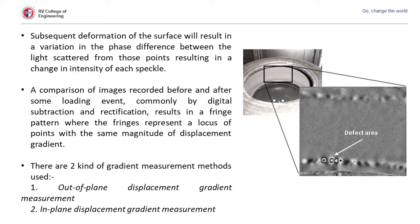As you can see in the figure shown here, fringes are formed over the defected area, so we can locate the magnitude and the displacement gradient. There are basically two methods used in shearography: the first is the out-of-plane displacement gradient method and the second is the in-plane displacement gradient method.